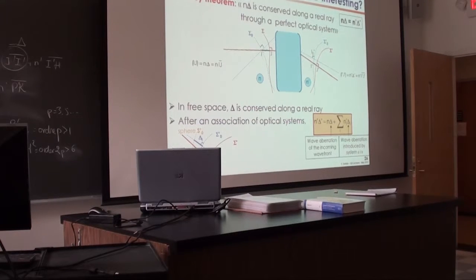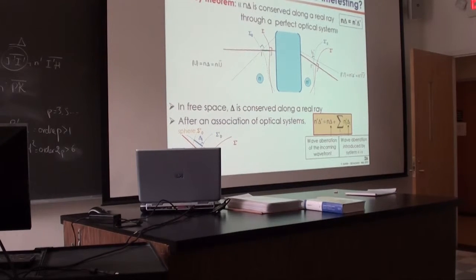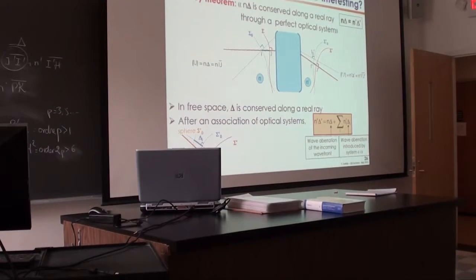Rays come back on themselves, and the perfect mirror — which is rigorously stigmatic for its center of curvature — does not introduce any aberration. Only the optical system under test introduces a wave aberration delta. Waves come back and you accumulate the aberration a second time. So here you get a wavefront coming back with twice the wave aberration, and it interferes with a reference plane. To test your system totally, you rotate the system so you can vary the field angle or the height of the object y — on axis and then for various off-axis points.